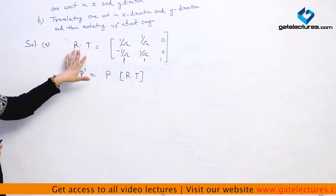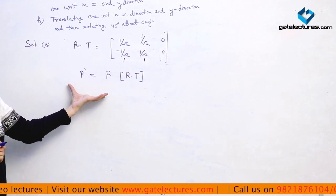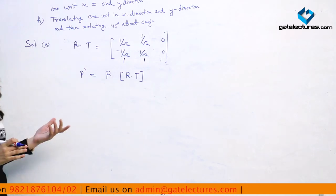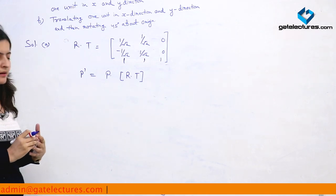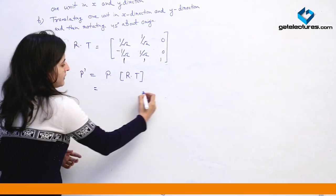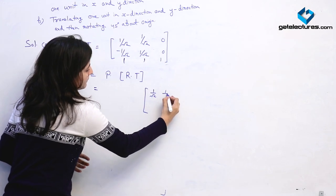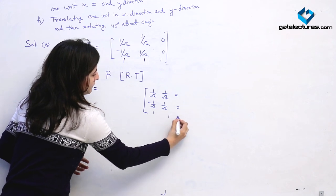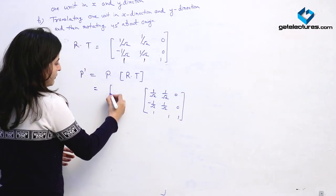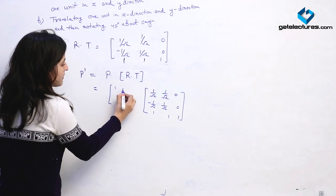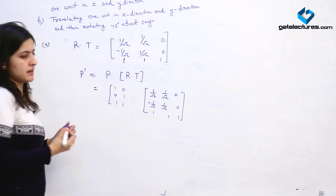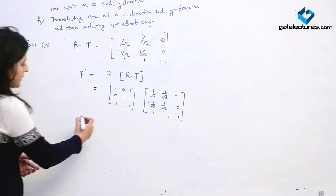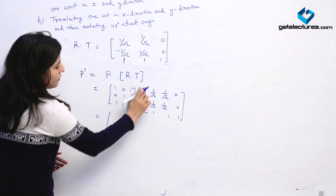This gives us the R·T composite rotation and transformation matrix. Now we find the coordinates of the new transformed triangle. P' = P·(R·T). The value of P — the coordinates of the triangle given — is written as the matrix [1, 0, 1], [0, 1, 1], [1, 1, 1] in 3×3 form. We then solve by matrix multiplication, taking the first row by each column.